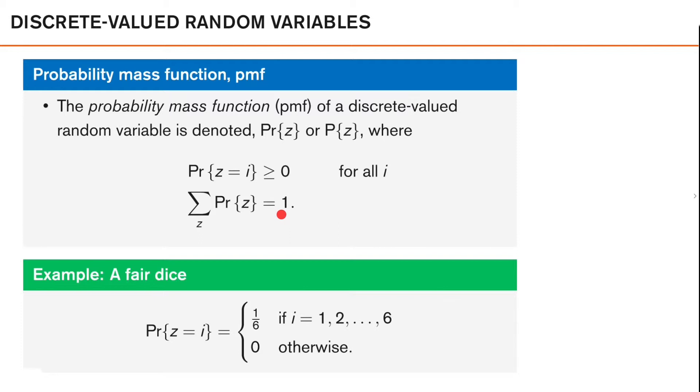We can also note that as a consequence of these two, we cannot have a probability mass for a value i that is greater than 1, which seems to be reasonable, right?